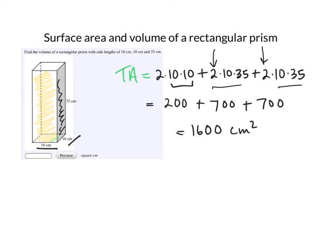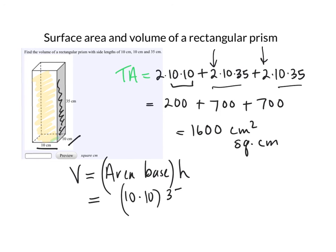The volume of this shape is the area of the base times the height. Area of the base is 10 times 10, or 100, times the height, which is 35.